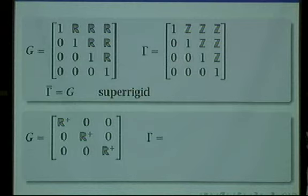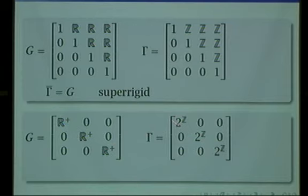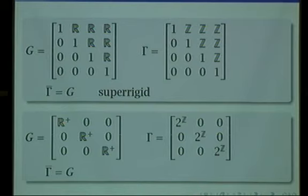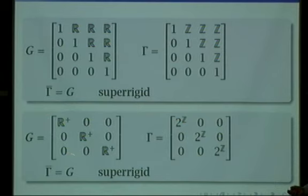If G is the group of diagonal matrices, then my lattice — I always take the integer points. Integer points here is a little more complicated since this is a multiplicative group. To get integer points multiplicatively, you have to take exponentials. So I'm looking at all the integer powers of something — that's my integer points. The obvious connected group that contains all of these integer matrices is all diagonal matrices, which is G. Now the question: superrigid or not? Actually, if you've been paying attention, it's supposed to be obvious that Gamma is superrigid in G.